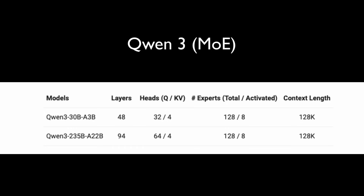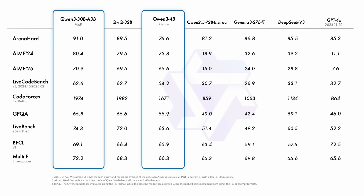The biggest monster of all is the Qwen3 235B A22B parameter model — 22 billion parameters are active out of a total 235 billion parameters. This makes it incredibly efficient for its size, because you only need the compute required to run 22 billion parameters at any given point, yet you get the performance of a 235 billion parameter model. Even the smaller MOE model, Qwen3 30B A3B, outperforms its predecessor Qwen2.5 32B, using fewer resources and delivering a much better model.